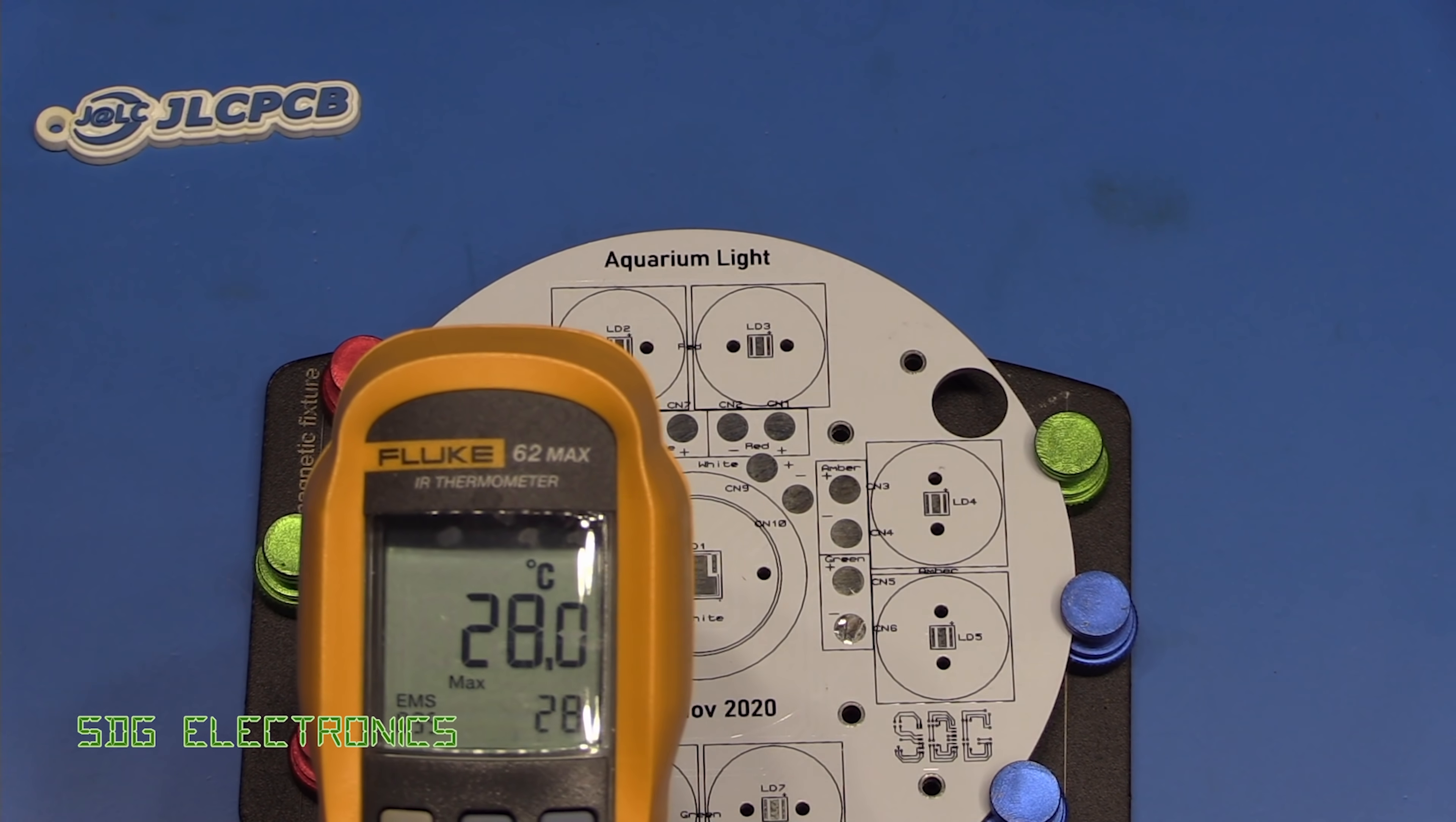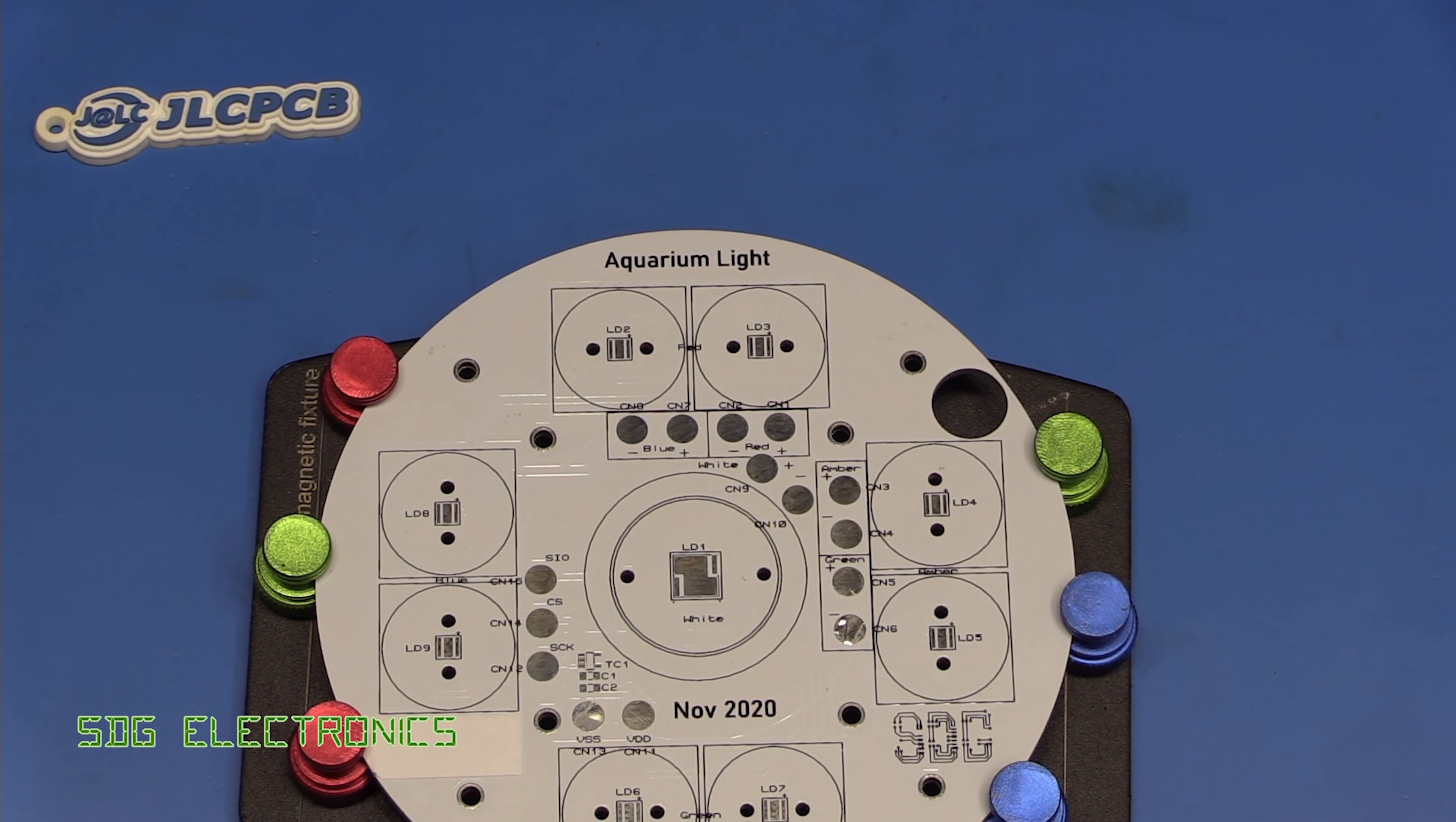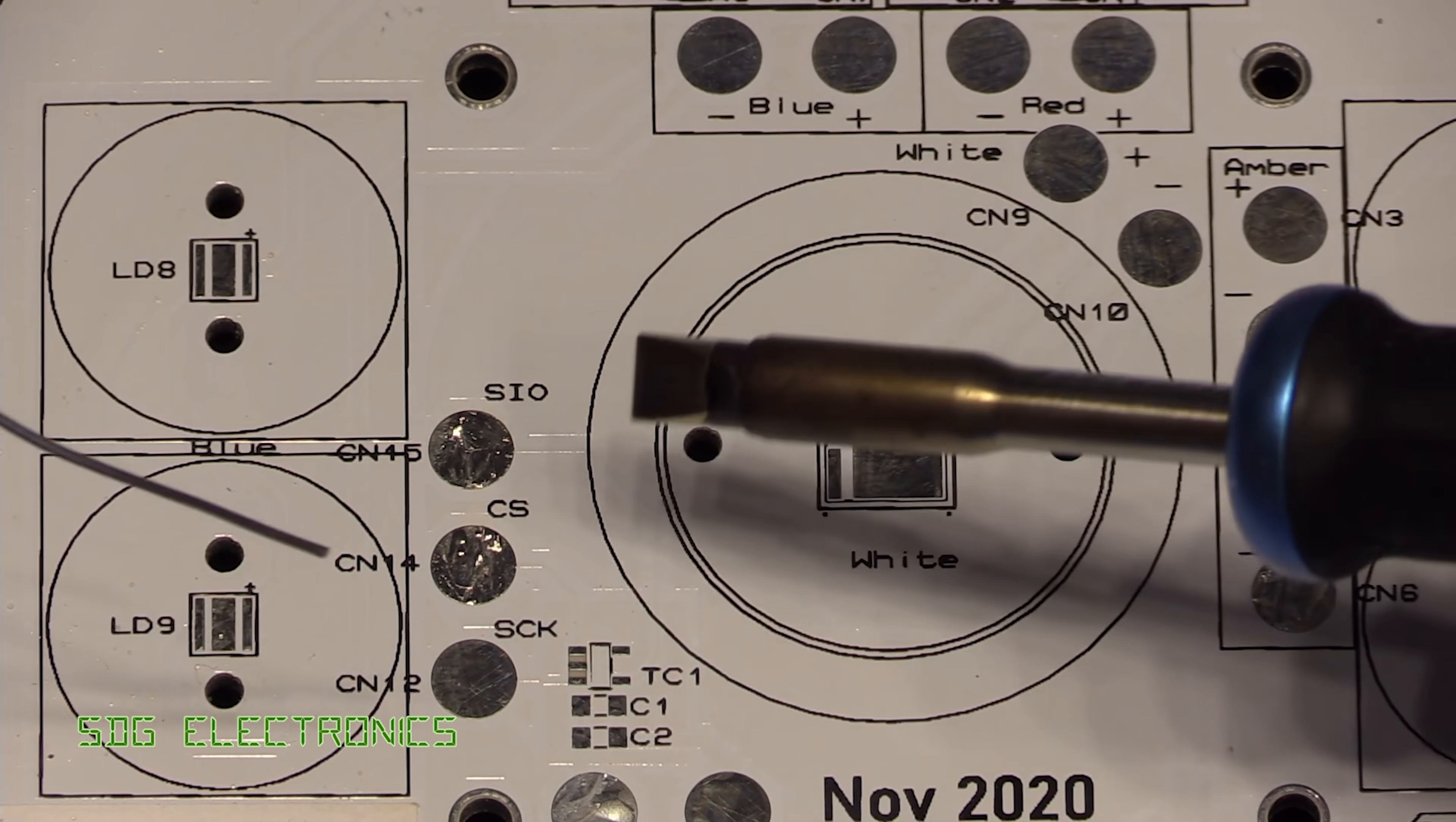So the PCB is at about 28 degrees C and we'll try soldering a wire on here with the Pace ADS200 which is the station that I've actually been least impressed with. Let's try that first and see how that performs. We'll put some solder onto this pad and then try and heat up the pad once again to actually solder the wire onto it.